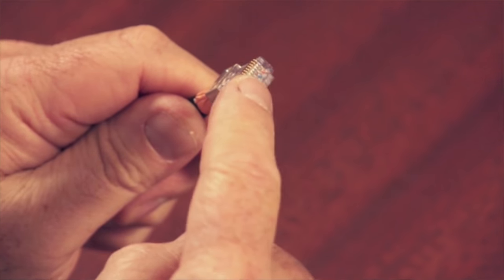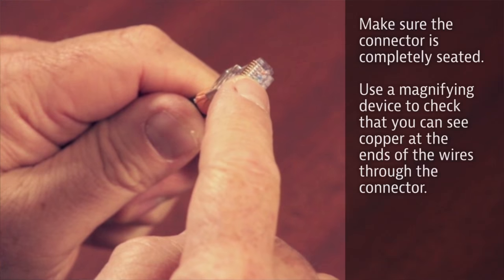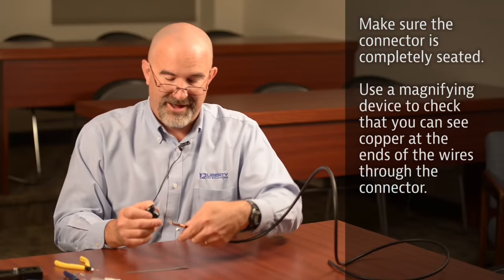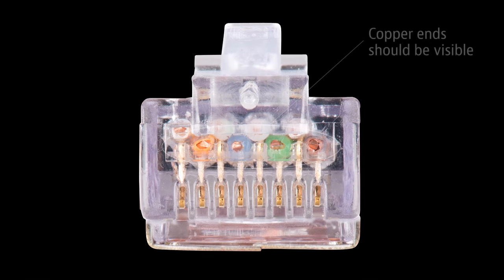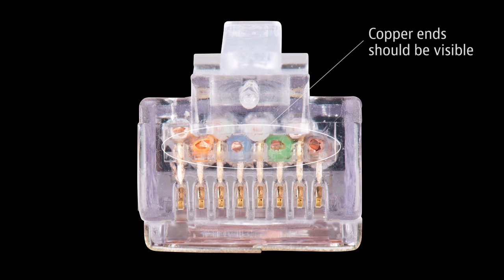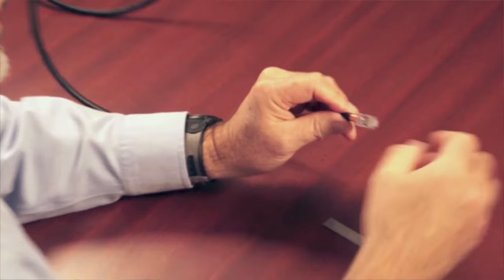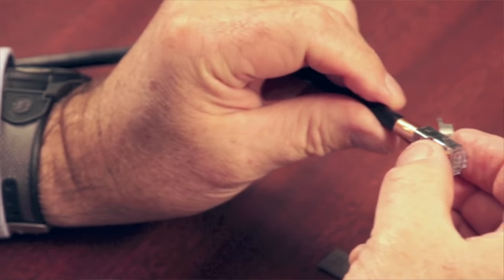The way you tell whether your connector is seated all the way is if you can see copper at the front of the connector. I'm going to validate mine with a 5-power jeweler's loupe. Validate your color code and whether you have copper showing, which I do. Now I'm going to slide the strain relief up and bend it over by finger power.